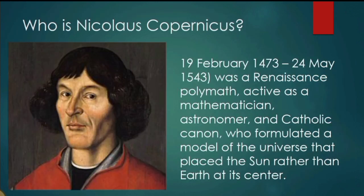Who is Nicolaus Copernicus? He was born in February 1473 and died on May 24, 1543. He was a Renaissance polymath active as a mathematician, astronomer, and Catholic canon who formulated a model of the universe that placed the Sun rather than the Earth at its center. The Renaissance refers to the 'rebirth' — an age of art and literature — and Copernicus lived and worked during this period.